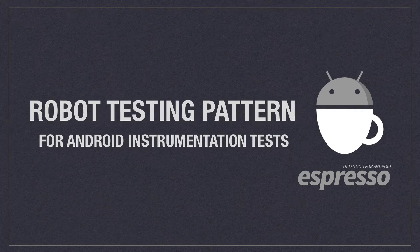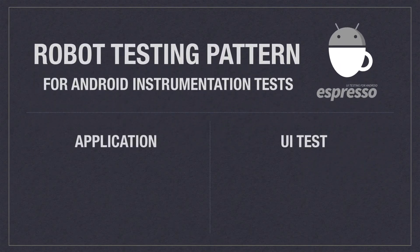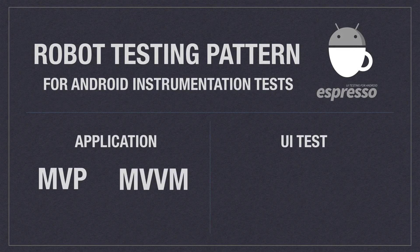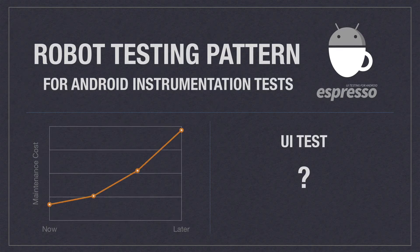The robot testing pattern is a testing architecture that can be used to write Espresso UI tests on Android. You've probably heard about application architectures like MVP or MVVM, but you probably haven't heard much about test architectures. Establishing an architecture in any codebase is important, because as a project grows, the cost to maintain it rises unless you introduce logical layers of separation, like testing robots.